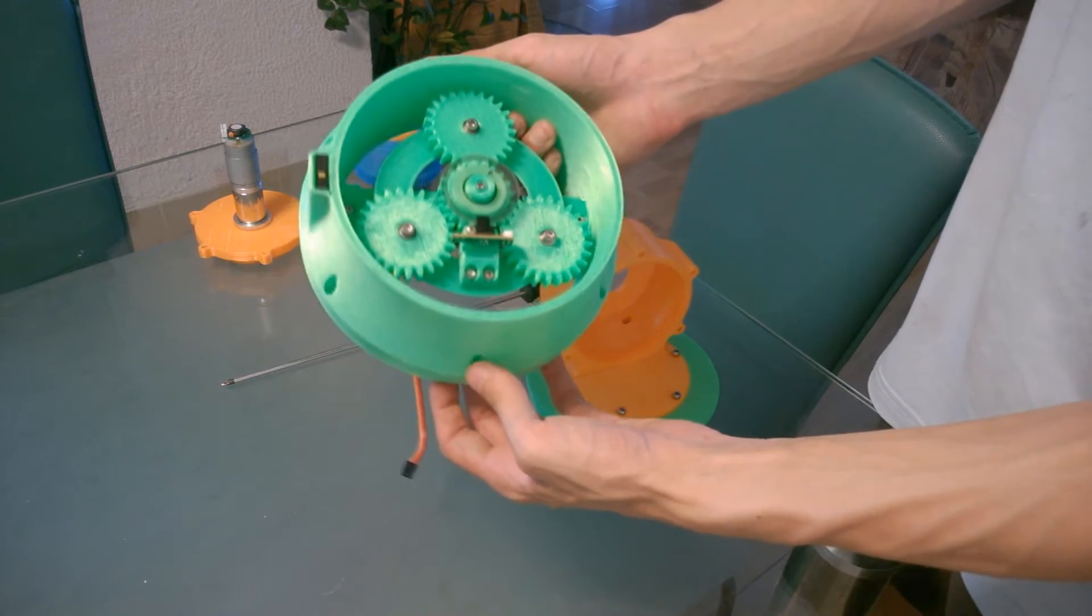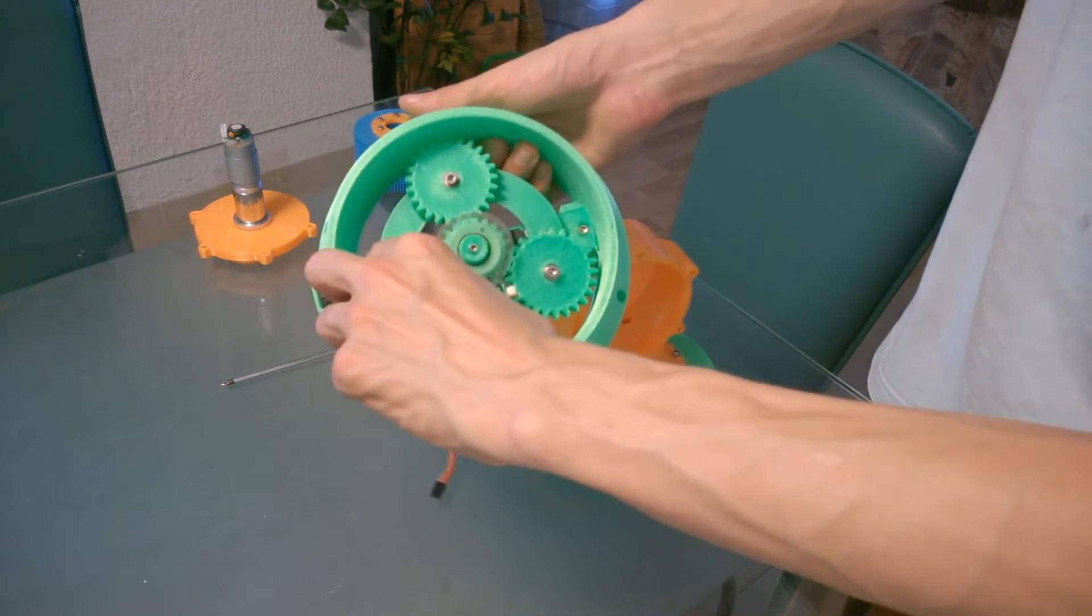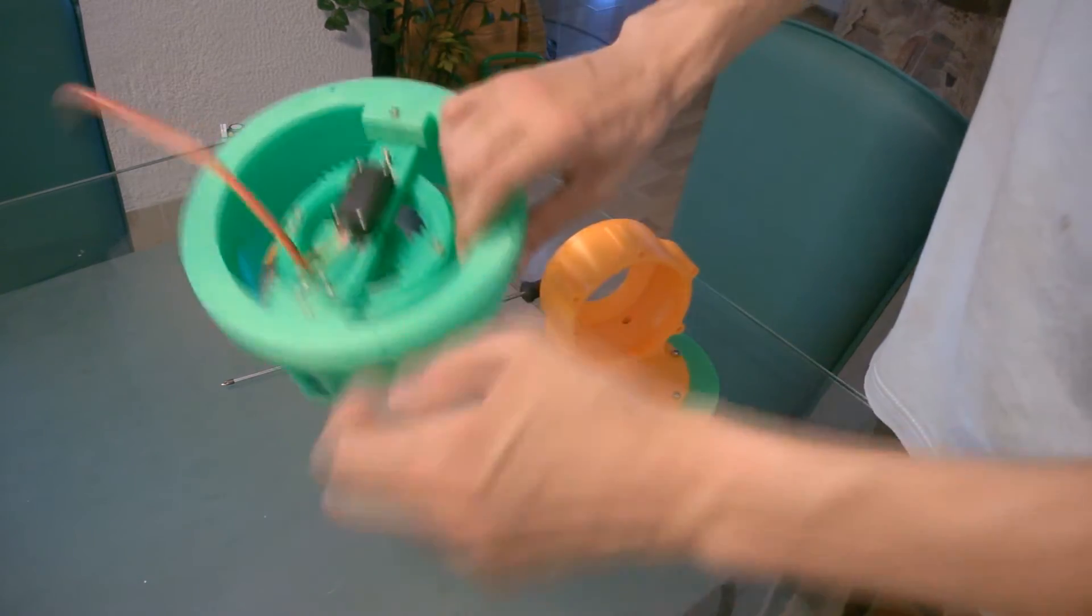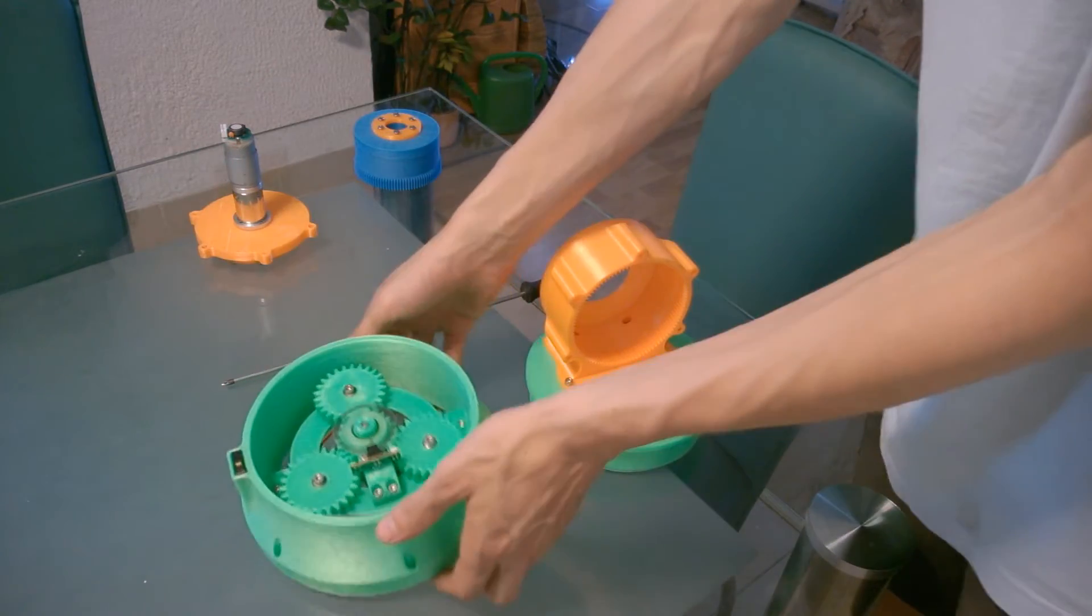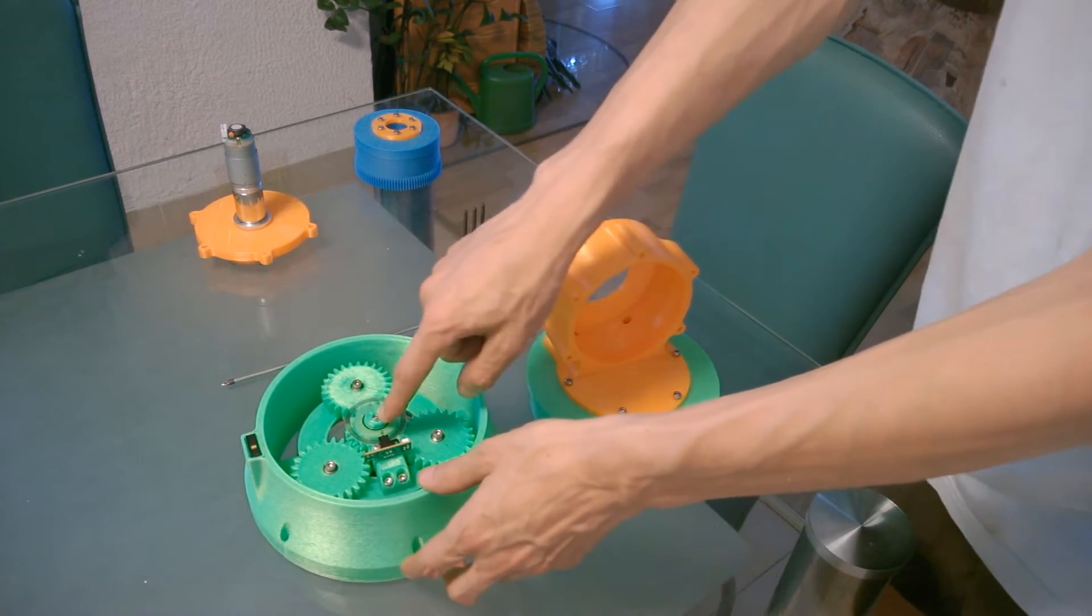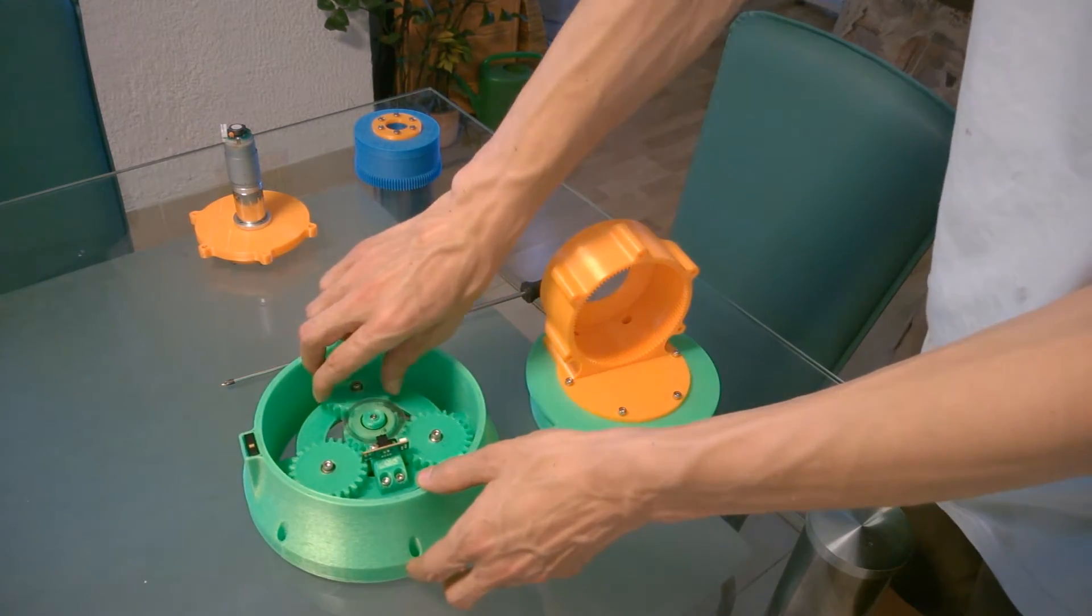For the first axis I'm using a planetary gearbox driven by a small standard servo motor and I took an encoder from an old printer. It works pretty well.